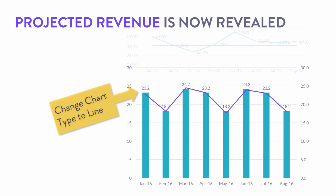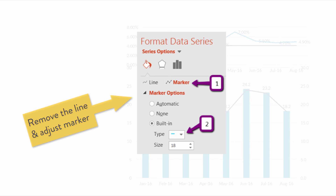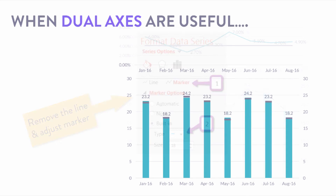I don't recommend keeping it as a line chart — I still don't love this view. So I went to Format Data Series and went to Marker. First I removed the line, which just leaves you with each marker above the data points. Then I changed the type of the marker to be a little line segment.